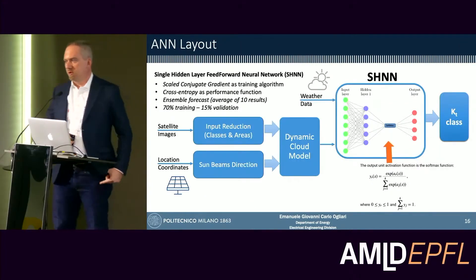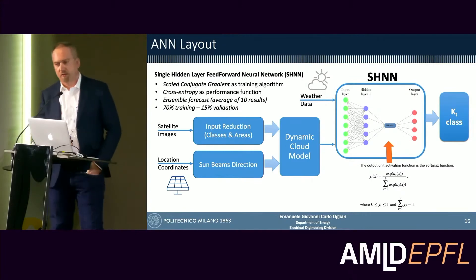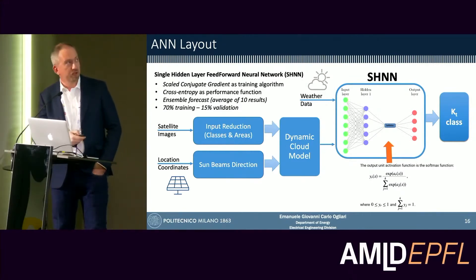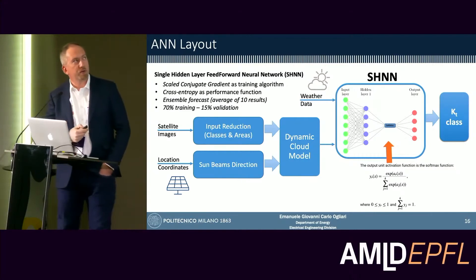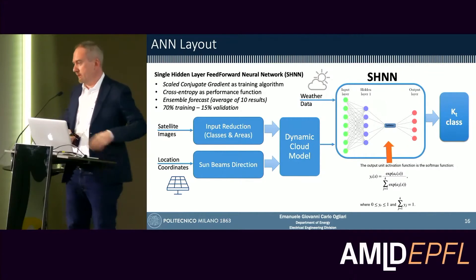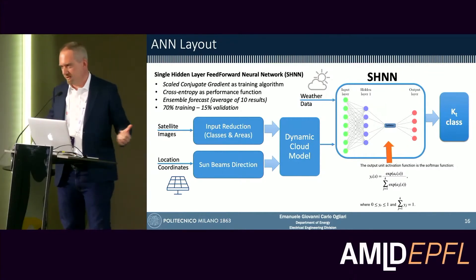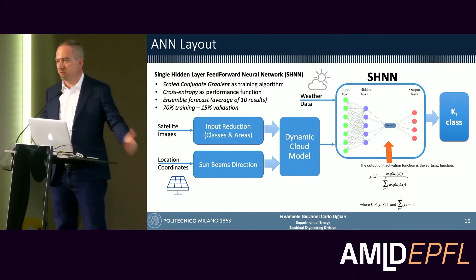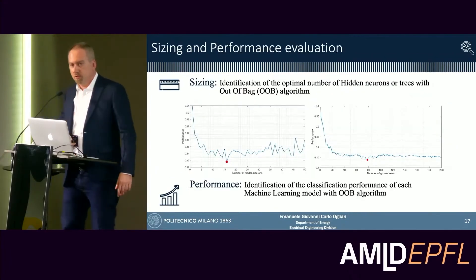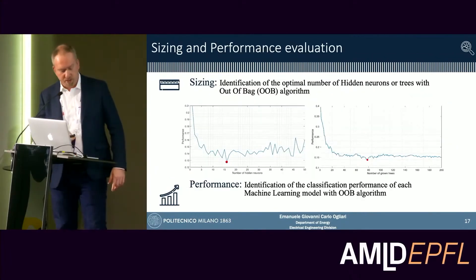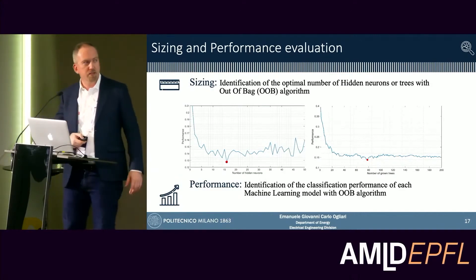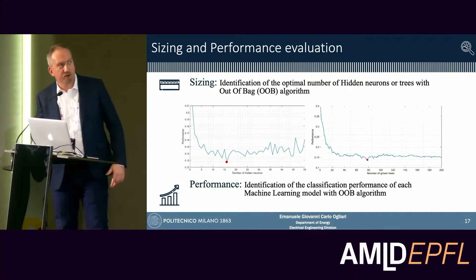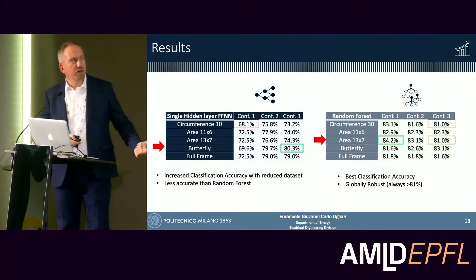The first model is a single hidden layer feed-forward neural network, with inputs from the previously described features. We performed ensemble forecasting using a simple average, which is accurate enough as a basic ensemble method. We included a softmax transfer function for classification. We also calculated the optimal number of hidden neurons in the hidden layer, and the number of trees using the out-of-bag algorithm for the random forest.